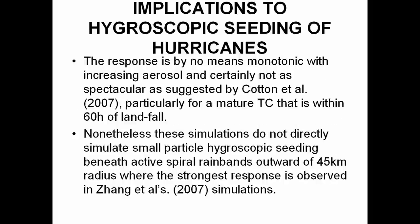Regarding hygroscopic seeding of hurricanes: the results are by no means monotonic with increasing aerosol, and not as spectacular as in my earlier paper, particularly for a mature tropical storm. These simulations do not directly simulate small hygroscopic seeding beneath active spiral rain bands outward of 45 kilometers — the CCN are advected in through the boundaries. A lot of this non-linearity and non-monotonic response depends on the maturity of the convective cells in those rain bands when the added CCN gets in there.